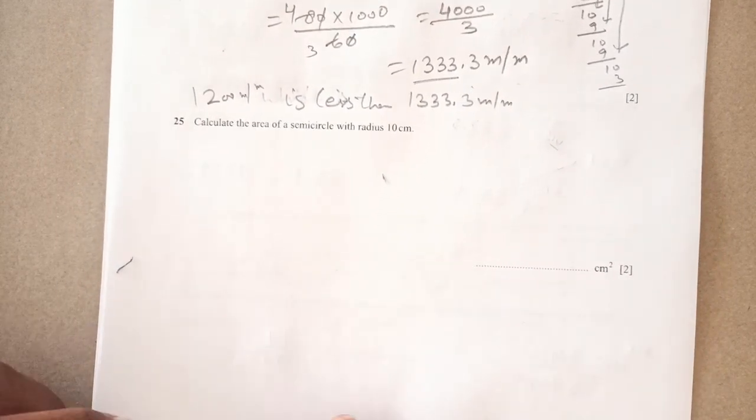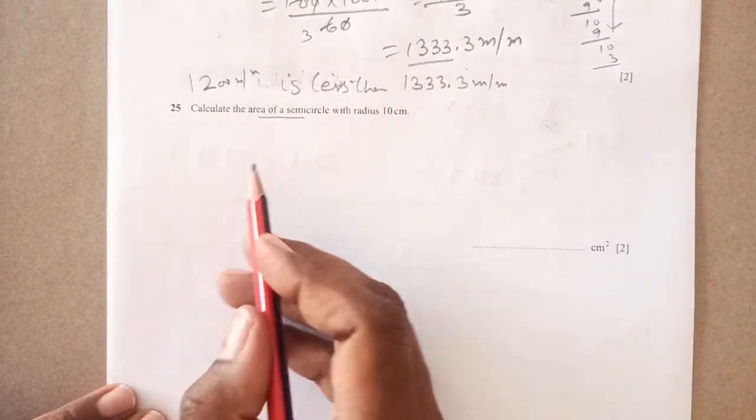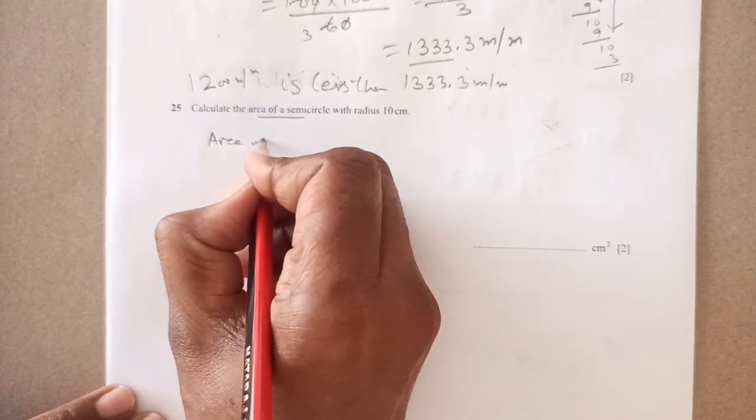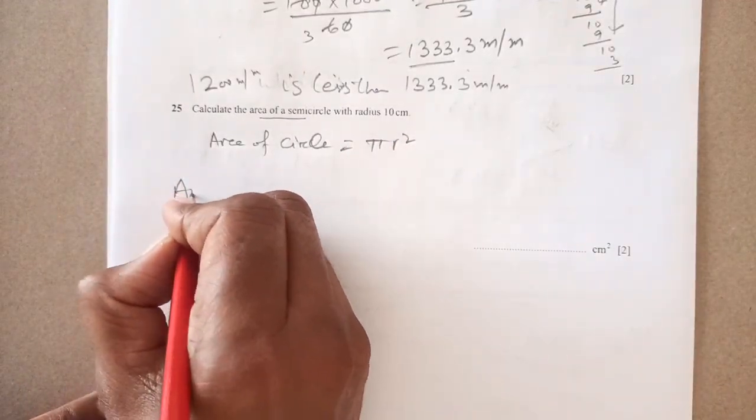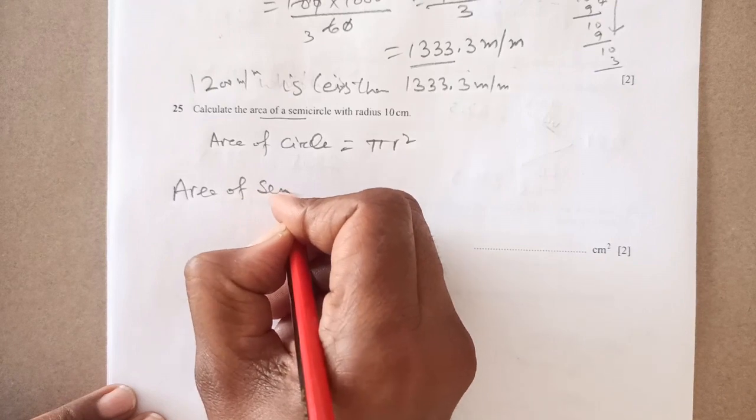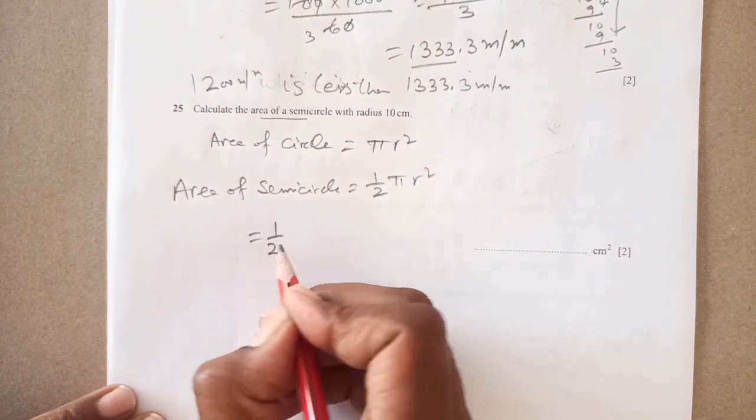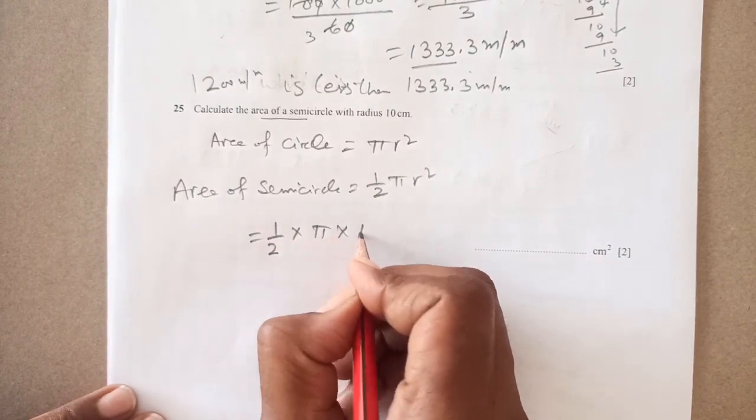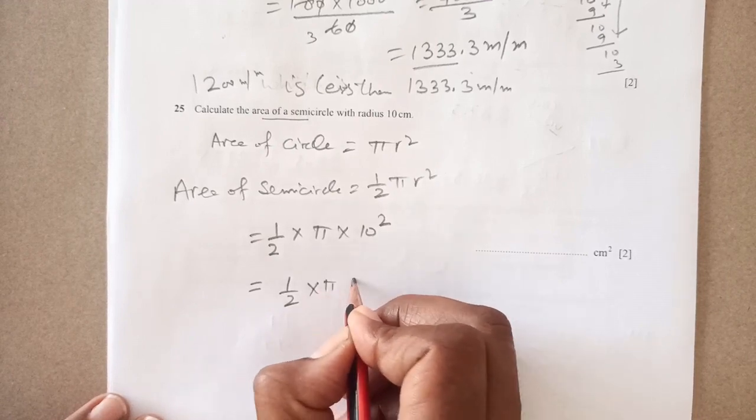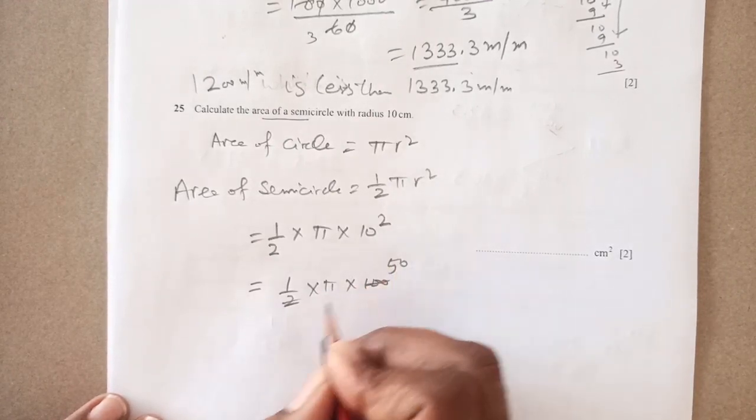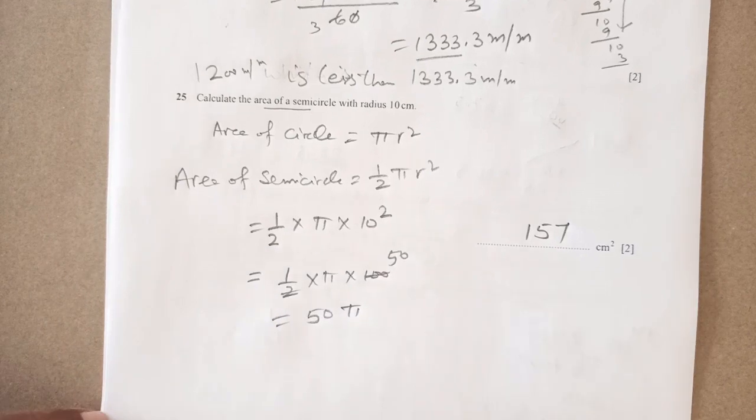Number 25, the last question: calculate the area of semicircle with radius 10 centimeters. Area of circle is πr squared. Semicircle is half of the circle, so area of semicircle is half πr squared. This is half times π times 10 squared, which is half times π times 100, equals 50π. Once you calculate, it comes out to be 157 centimeters squared.